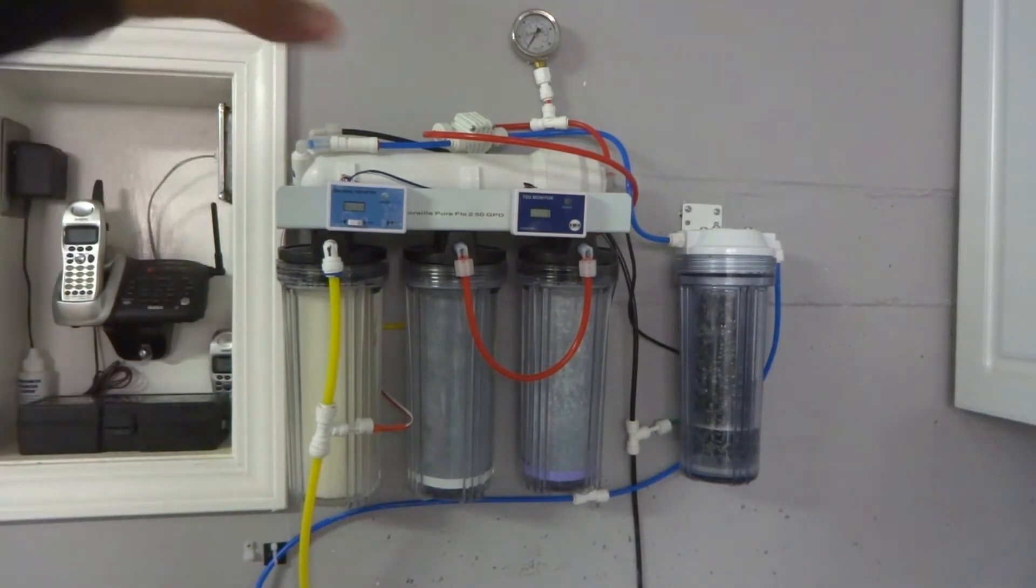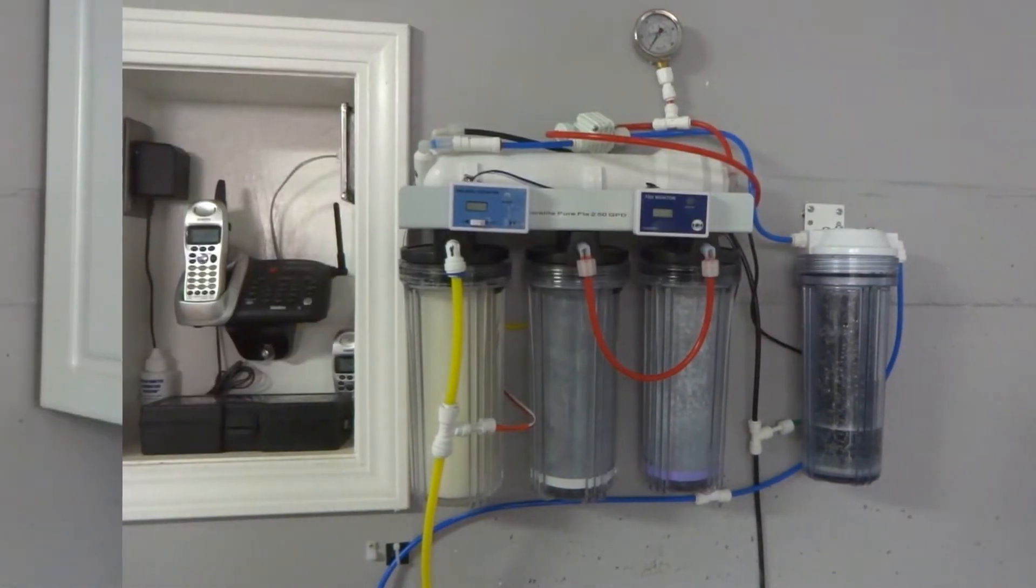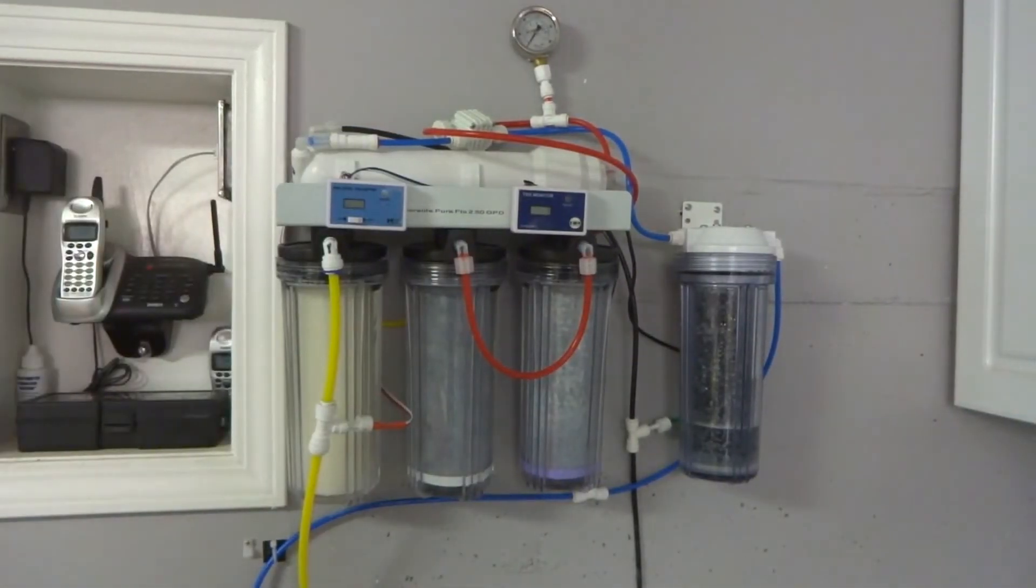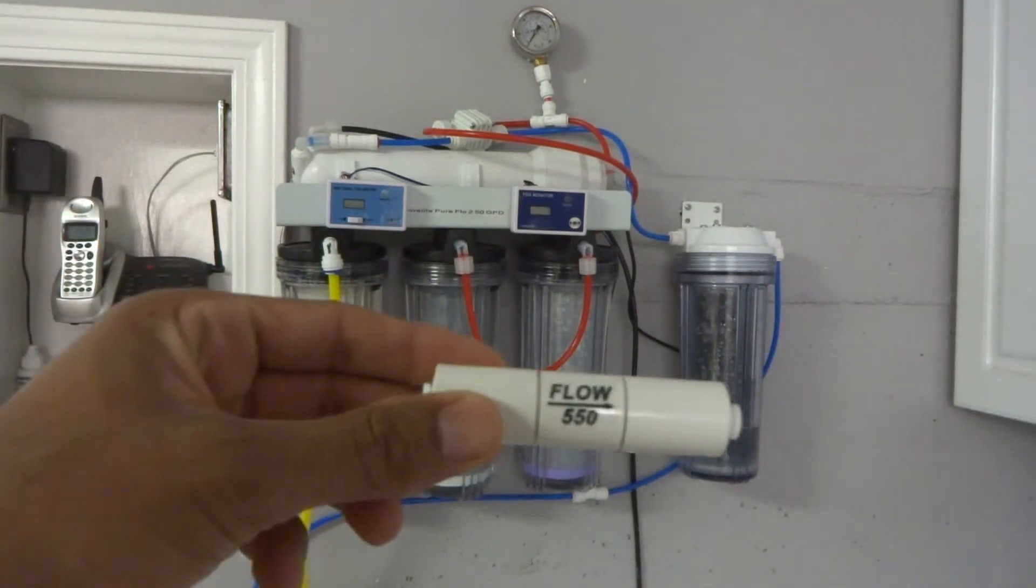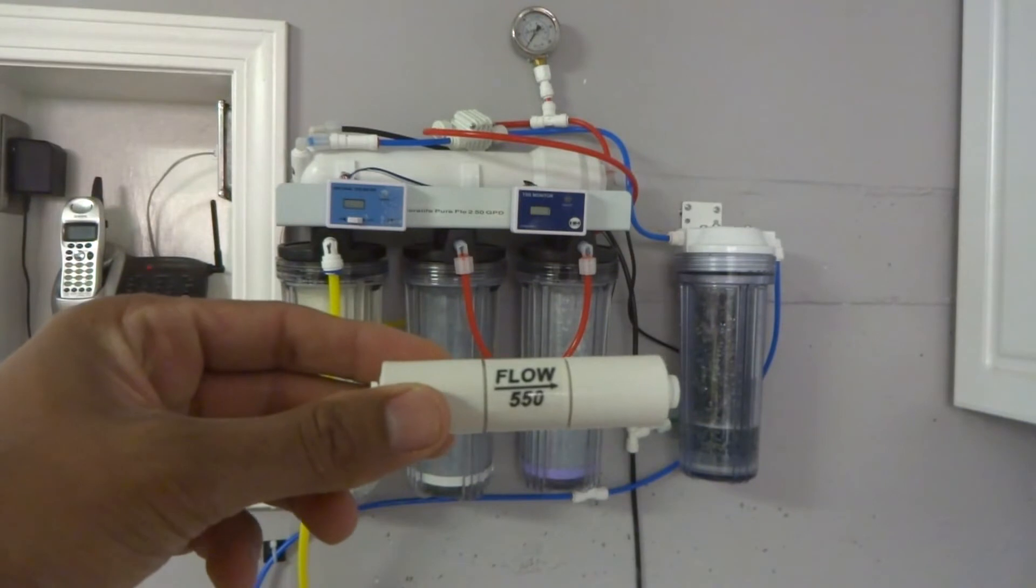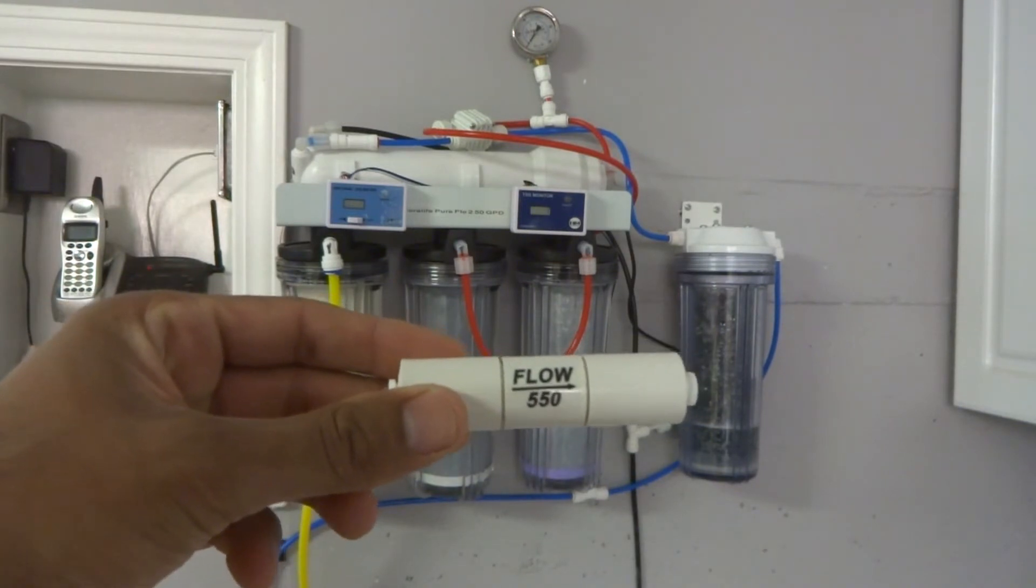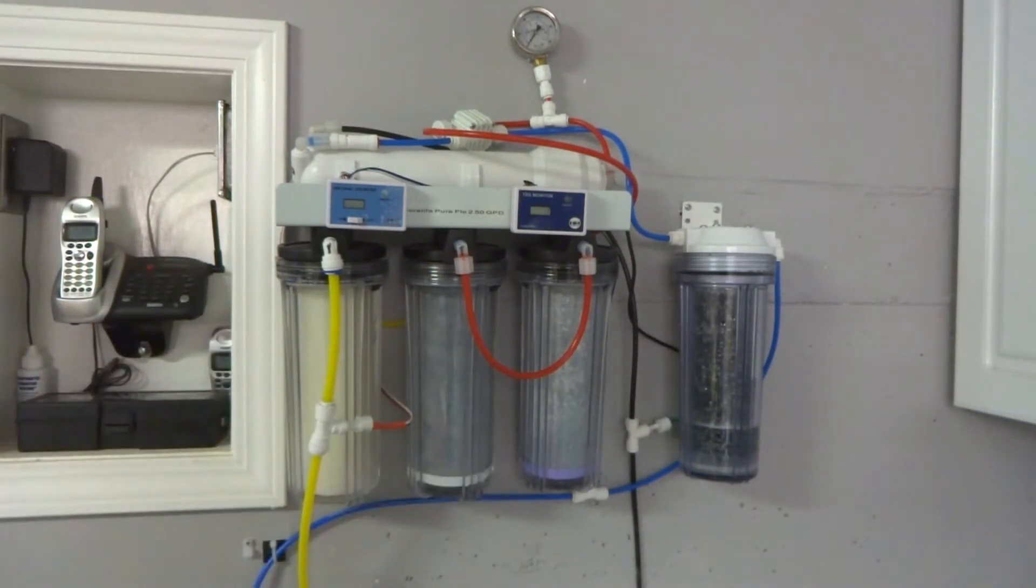The sediment and the carbon to the membrane to the DI resin. Because I'm upgrading this from a 50 gallon per day unit to a 75 gallon per day unit I also have to change up the flow restrictor that comes out of the waste line. The flow restrictor is rated for 75 gallons per day. Again this is all bulk reef supply upgrades to include the flow restrictor.